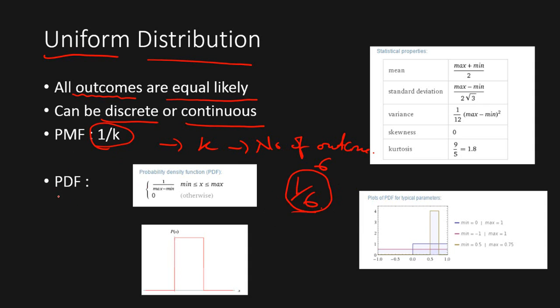In the continuous case, we deal with the probability distribution function given by 1 by maximum minus the minimum. In the case of a continuous distribution, the probability density function will look like this, wherein the x, which is the random variable of the outcome, will have a minimum value and the maximum value. This is the minimum value and then here it is the maximum value. The PDF is given by 1 upon maximum minus minimum.